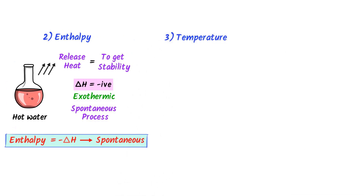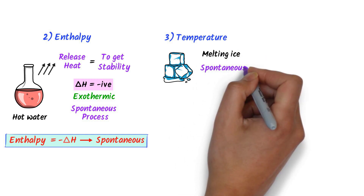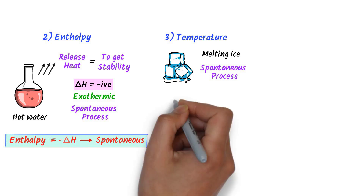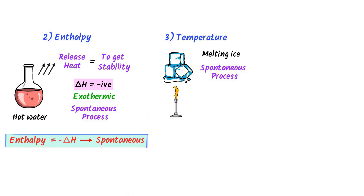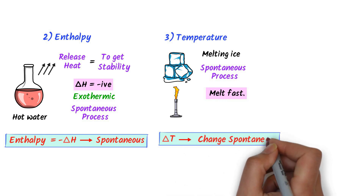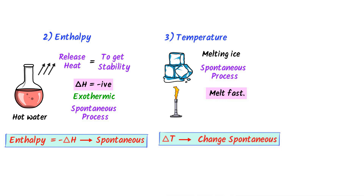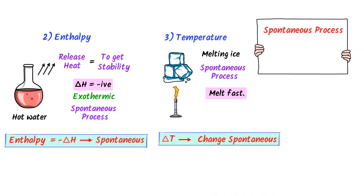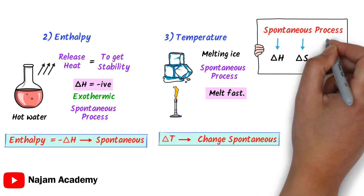Thirdly, understanding the effect of temperature on spontaneous processes. Let's consider this melting ice. We know that melting of ice is a spontaneous process. If I add some heat to this melting ice, it will quickly melt. Thus, we conclude that if we increase temperature, the rate of a spontaneous process either increases or decreases. Until now, we know that any spontaneous process is affected by enthalpy change ΔH, entropy ΔS, and temperature T — these three variables are essential for understanding any spontaneous process.